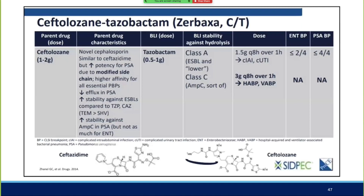Ceftolozane-tazobactam is a novel cephalosporin with increased potency for Pseudomonas via a modified side chain, better PBP binding, higher affinity for PBPs, decreased efflux by Pseudomonas, and more stability toward ESBLs and some AmpCs. Structurally it's essentially ceftazidime with a side chain modification. If a patient has ceftazidime hypersensitivity, be cautious about using ceftolozane-tazobactam. It has two approved doses: 1.5g Q8 over one hour, and 3g Q8 over one hour for HAP/VAP. Strongly encourage using the 3g Q8 dose routinely, especially for meropenem-resistant Pseudomonas, as renal dose-adjusted patients in studies had worse outcomes.